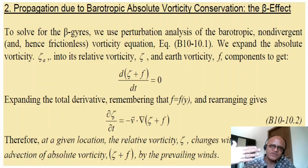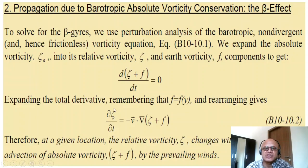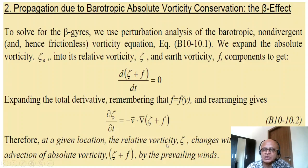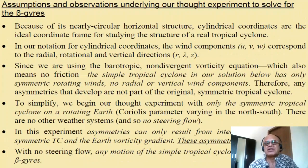The variation of Coriolis with latitude is critical for the motion of tropical cyclones. To solve for the beta gyres we use perturbation analysis, writing d(zeta + f)/dt = 0 in terms of the time derivative equals the advection of absolute vorticity. At a given location, the relative vorticity zeta changes with time due to the advection of absolute vorticity. Since we assume barotropic, the divergence term is zero, so the advection term simplifies, driven by the non-divergent prevailing winds.